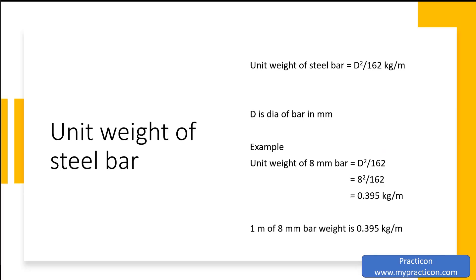Unit weight of the steel bar is one of the typical questions asked in interviews on construction sites. The unit weight of steel bar is D squared by 162 kg per meter, where D is the diameter of the bar in millimeters.